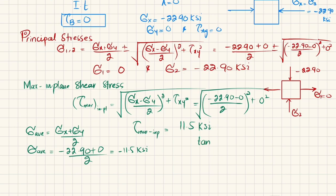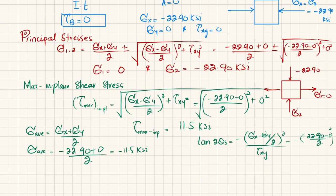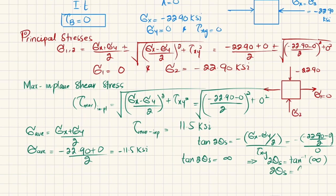Using the formula: tan(2θ_s) equals minus (sigma_x minus sigma_y) divided by 2, all divided by tau_xy. Substituting: minus (minus 22.90 minus 0) divided by 2, divided by tau_xy which is 0. So tan(2θ_s) equals infinity, meaning 2θ_s equals 90 degrees, giving theta_s equals 45 degrees or minus 45 degrees.